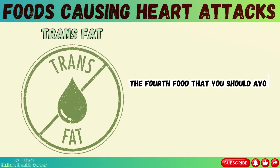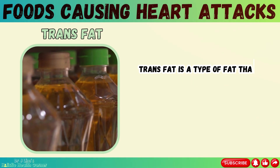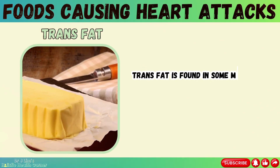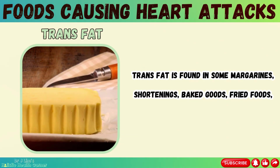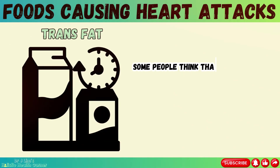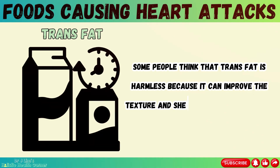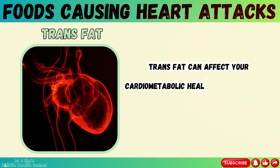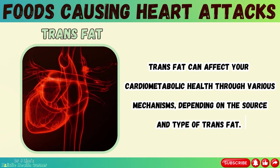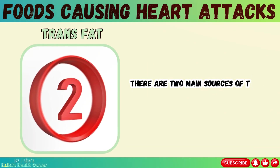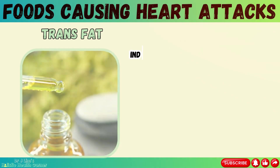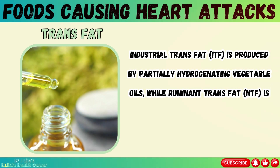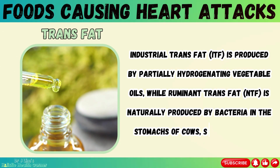The fourth food that you should avoid is trans fat. Trans fat is a type of fat created by adding hydrogen to vegetable oil to make it more solid and stable. Trans fat is found in some margarines, shortenings, baked goods, fried foods, and snack foods. There are two main sources of trans fat: industrial and ruminant. Industrial trans fat is produced by partially hydrogenating vegetable oils, while ruminant trans fat is naturally produced by bacteria in the stomachs of cows, sheep, and goats.